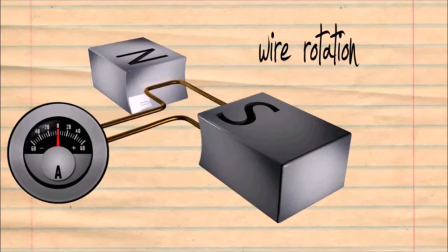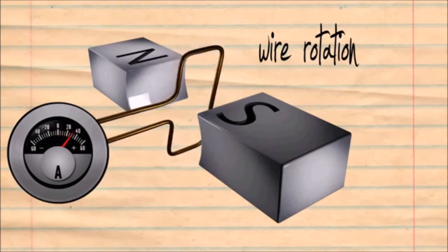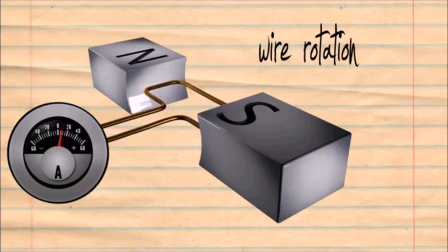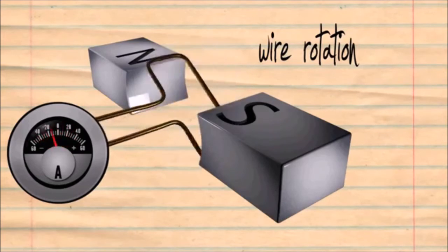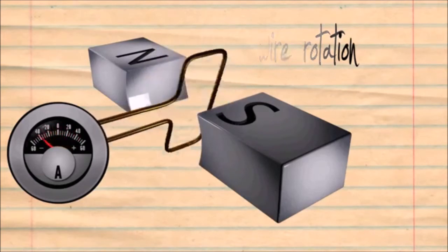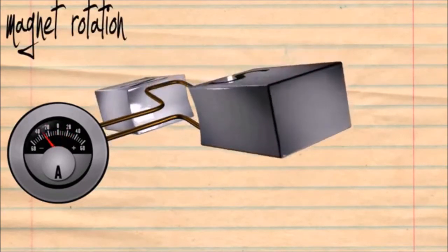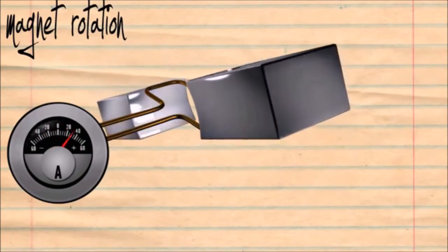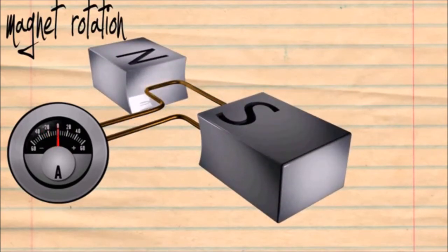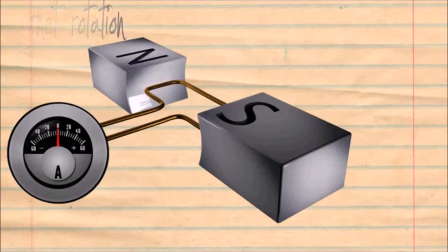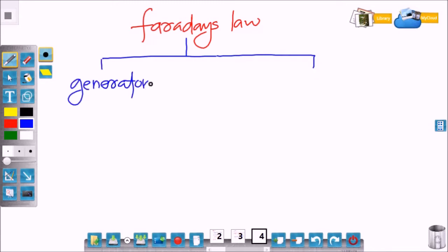If a rotor or coil rotates between the magnetic field, there is a cutting action of magnetic flux and that's why voltage gets induced in the coil. Similarly, if you fix the wire or coil and rotate the magnetic field, the same action takes place and there is a rise in voltage — voltage will get induced in the coil.